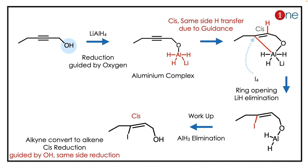The selectivity is induced by coordination of aluminum — chelation helps direct the final product formation. The key concept to learn here is guided reduction: when you have an alkyne and alcohol, aluminum salts provide mostly guided reduction.